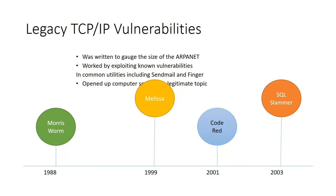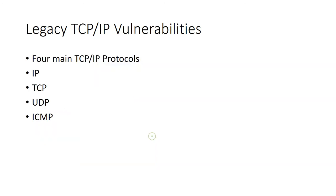There are four main TCP/IP protocols used today: IP, TCP, UDP, and ICMP. These protocols not only determine how packets should be formed and segmented and how connections are controlled, but they also control routing and communicate information like reachability. All of these protocols play a critical role in network communication.